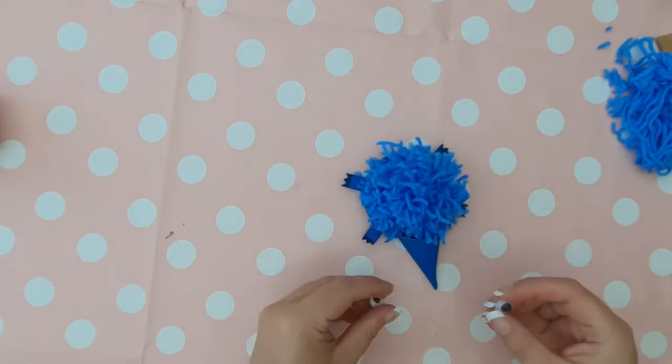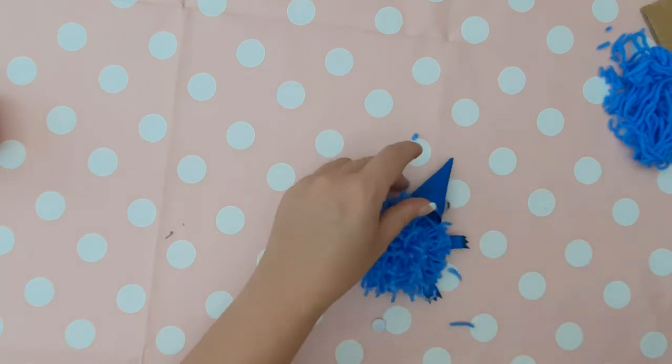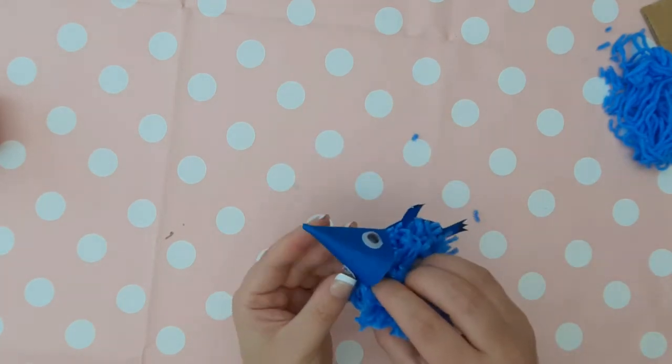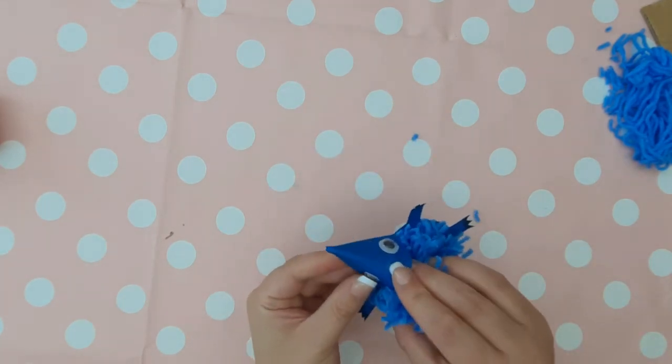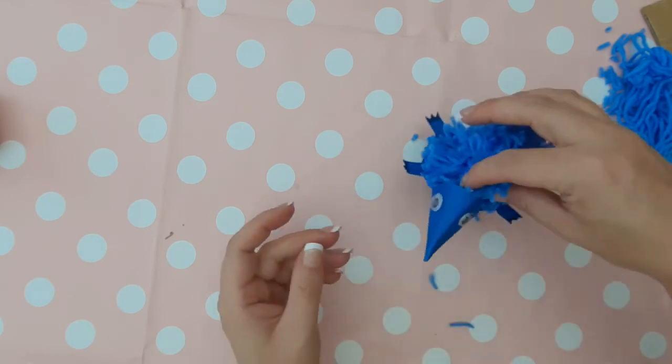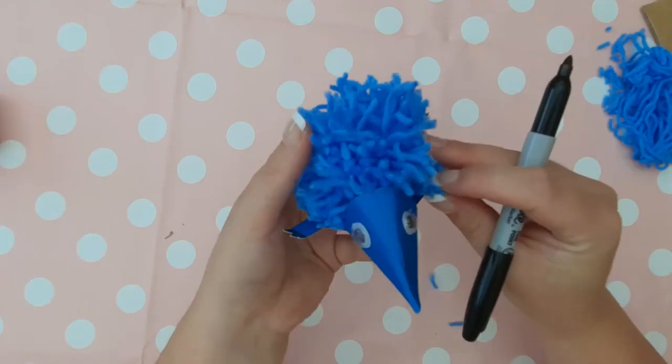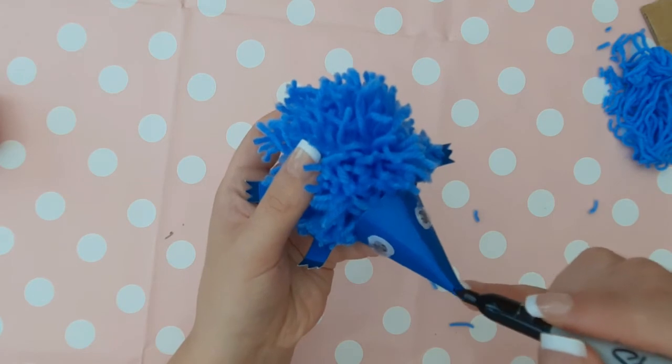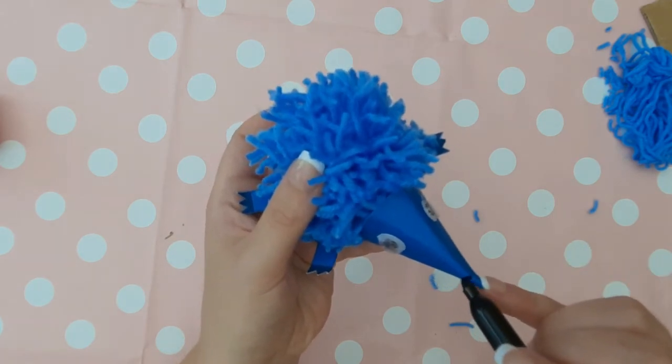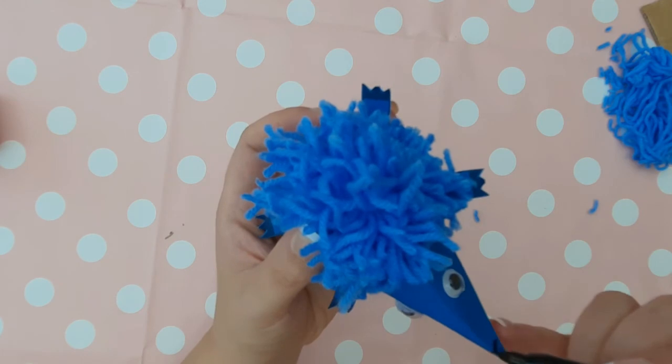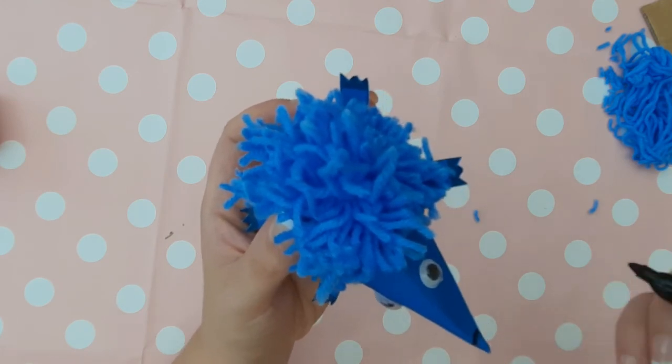Now we can give him a face. We can get some googly eyes and stick them on with some Pritt Stick, unless you have the ones where you just peel off the back and stick those on, much easier. I much prefer those, but I didn't have those. Then you can give him or her some eyelashes if you wish with a black marker pen, and then a little nose on the end.